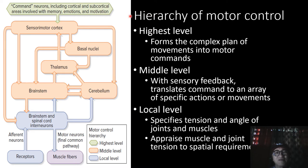The highest level includes the cerebral cortex centers and subcortical nuclei involved in memory, emotions, and motivation. The middle level is composed of the sensory motor cortex, the basal nuclei, thalamus, brainstem, and cerebellum, which specify the individual postures and movements needed to carry out an intended action.